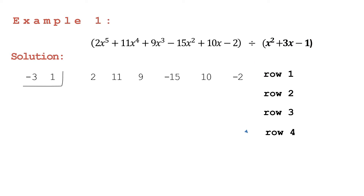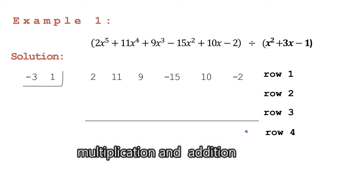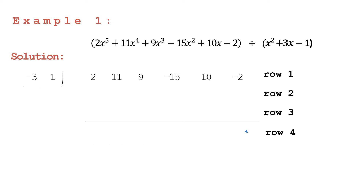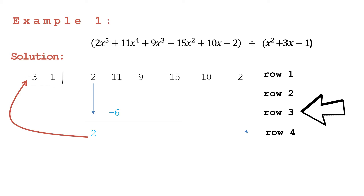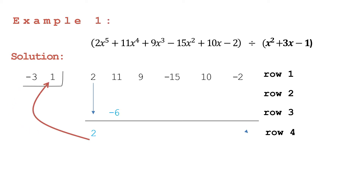Let's write our synthetic divisors: negative 3 and positive 1. Take note that we will be using two operations repeatedly — multiplication and addition — and we will be multiplying twice because we have two divisors. First, bring down the leading coefficient, then proceed: 2 times negative 3 is equal to negative 6; write negative 6 in row three, second column. 2 times 1 is equal to 2; write positive 2 in row two, third column.